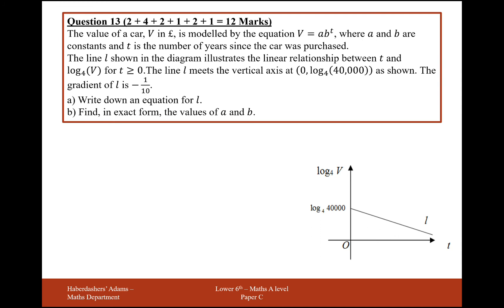The value of a car V in pounds is modelled by the equation V equals ab^t where a and b are constants, and t is the number of years since the car was purchased. The line L shown in the diagram illustrates the linear relationship between t and log base 4 of V for t greater than or equal to zero. Line L meets the vertical axis at zero log base 4 of 40,000 as shown, and the gradient of L is minus a tenth.